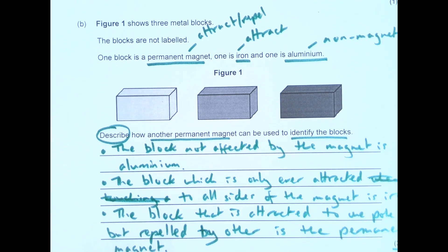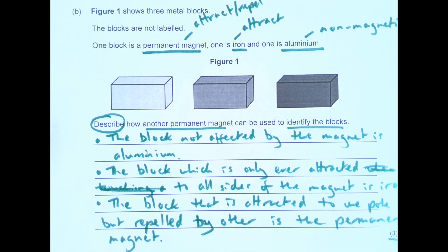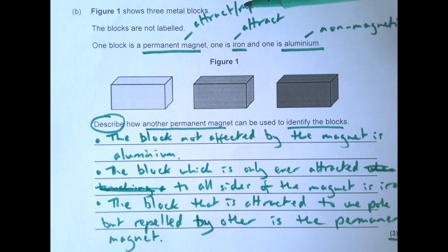Okay, the one that people forget is the fact that permanent magnets will attract and repel. By making a note at the top of the page: permanent magnets will attract and repel, iron always attracts, aluminium is never attracted. That really is the key to unlocking this question.